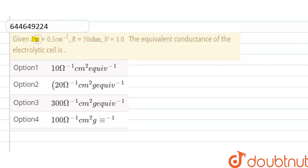Hello everyone. Here the question is: given l by a, that is cell constant, is equal to 0.5 per centimeter, resistance is 50 ohm, and normality is 1.